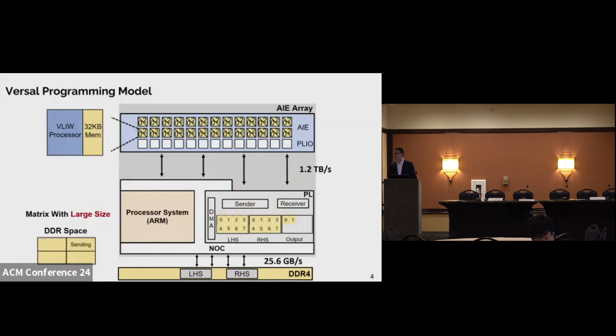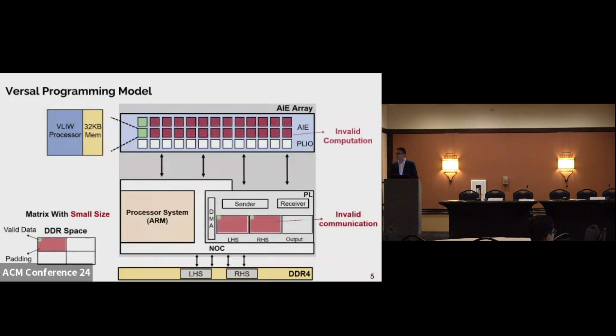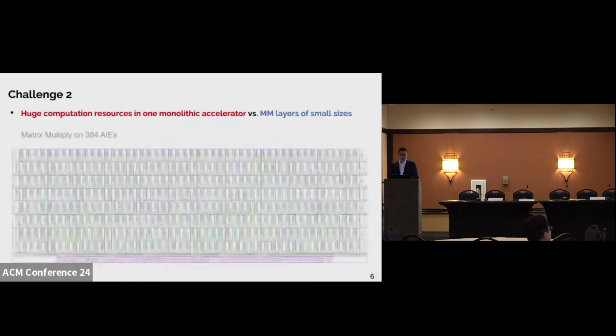However, this solution doesn't work when the matrix size is small. Assume we have the application that has small layers marked as valid data in the DDR space. If with the same hardware configuration, meaning that we still allocate a large number of BRAM and AIE, then if we go in the same processes, it will lead to both the invalid communication and the invalid computation.